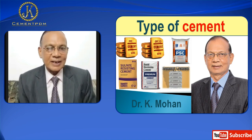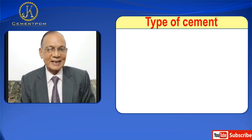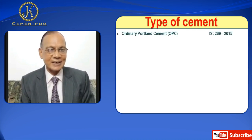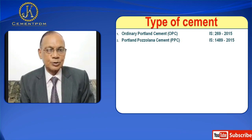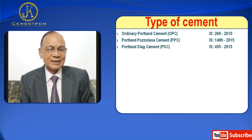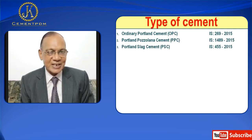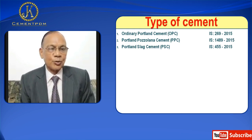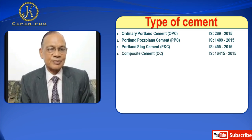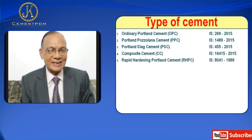Number one is Ordinary Portland Cement, OPC — IS 269-2015. Next is Portland Pozzolana Cement, PPC — IS 1489-2015. Next is Portland Slag Cement, PSC — IS 455-2015. Number four is Composite Cement — IS 16415-2015. Rapid Hardening Portland Cement, RHPC — IS 8041-1989.